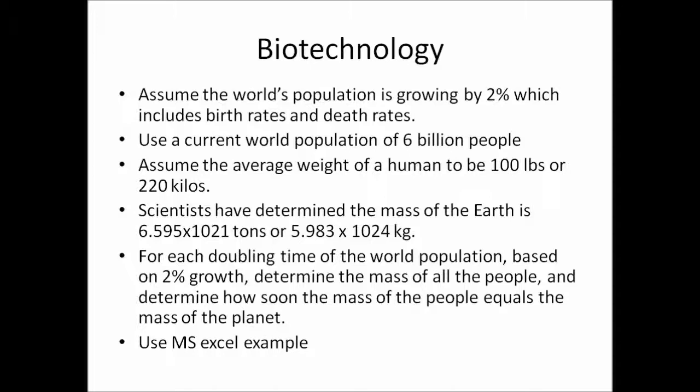For the Biotechnology Problem category, assume the world's population is growing by 2%, which includes birth rates and death rates. Use a current world population of 6 billion people and assume the average weight of a human to be 100 pounds or 220 kilos. Scientists have determined the mass of the Earth is 6.595 times 10^21 tons or 5.9 times 10^24 kilograms. For each doubling time of the world population based on 2% growth, determine the mass of all people and determine how soon the mass of all people equals the mass of the planet.